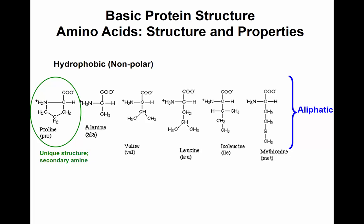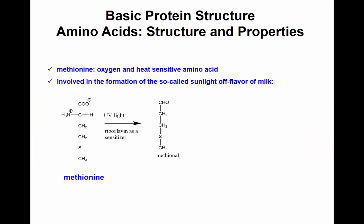The rest of the aliphatic amino acids are mostly hydrocarbons — alanine has a CH3 methyl group, and they just increase in hydrocarbon chain length. The exception is methionine, which has a sulfur group. Methionine is a sulfur-containing amino acid and can get converted to methional, which has off-flavor characteristics — known as the sunlight off-flavor of milk, because it's produced under UV light exposure in the presence of riboflavin.